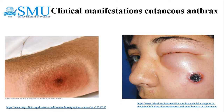Cutaneous anthrax: clinical manifestations involve changes on the skin. Cutaneous anthrax accounts for 95% of all anthrax infections. The name anthrax refers to the typical black eschar that is seen on affected areas.